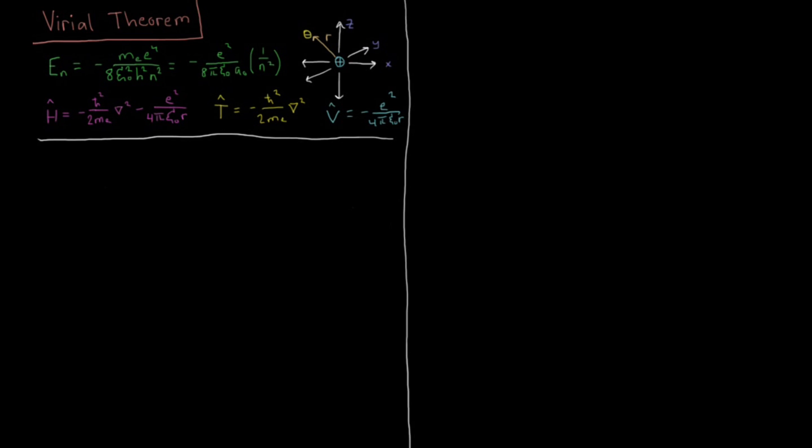In this video, we're going to look at the expectation values for kinetic and potential energy for a hydrogen atom, and also use these to look at a concept called the Virial Theorem. So, if we want to calculate the expectation value of potential energy, which in the hydrogen atom is just the Coulomb force acting between the electron and the proton, which we have fixed at the origin here.